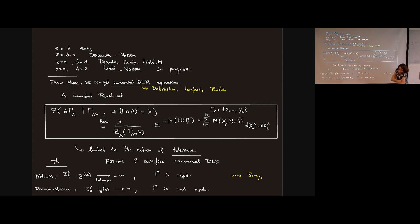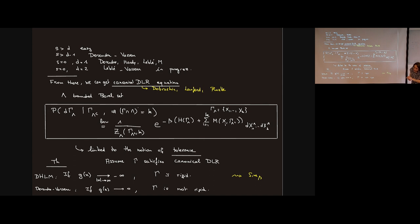Regarding the perturbed lattice in D=1 and D=2 being rigid but not in D≥3: is there a relation to recurrence of random walks? Yes, exactly. In dimension one it's quite easy to see that adjusting the slope you can apply the Ghosh-Peres criterion. In dimension two you have to look harder, but in dimension three they couple with random walks and it's linked to the fact that the simple random walk is transient in higher dimensions.